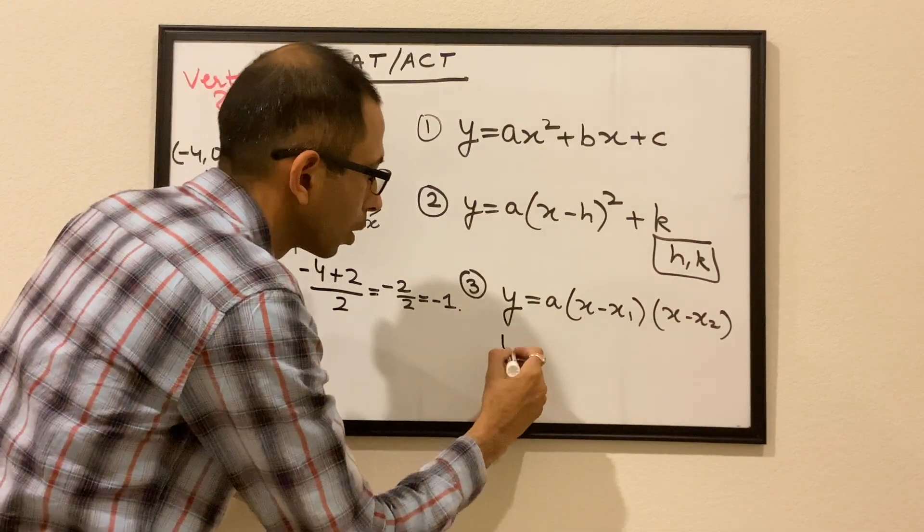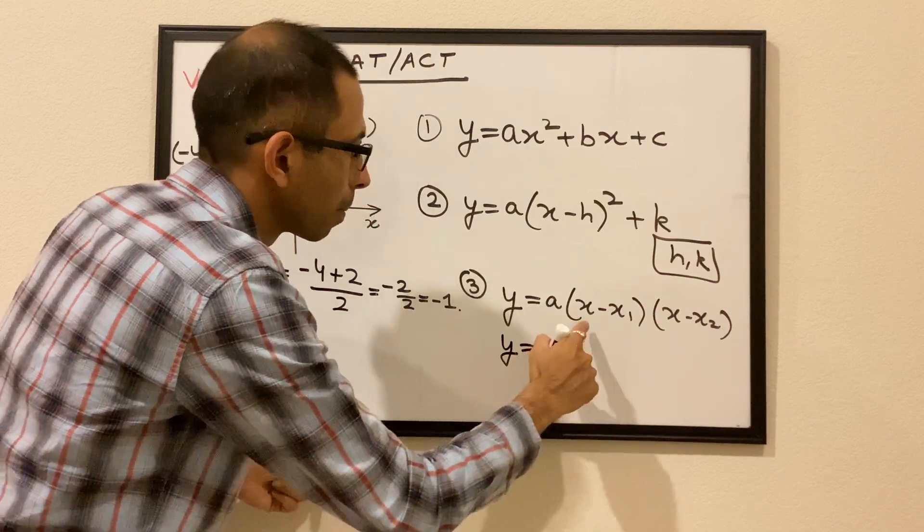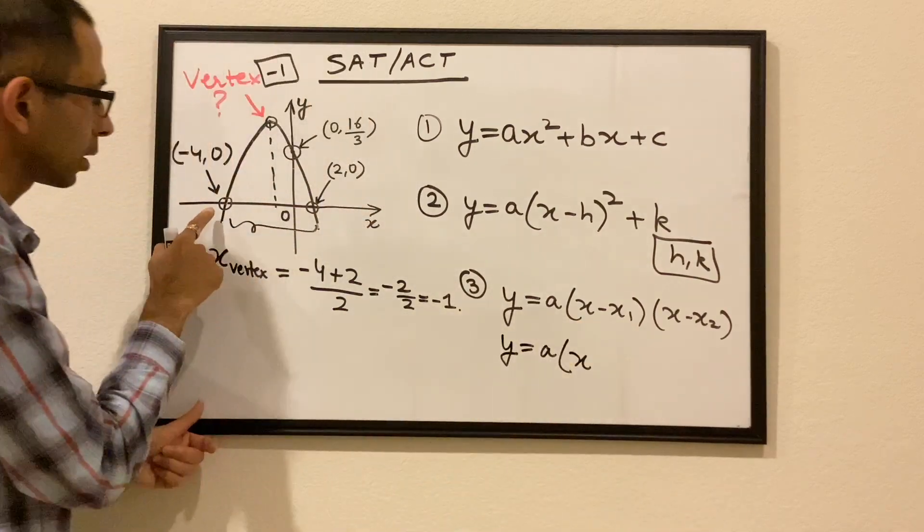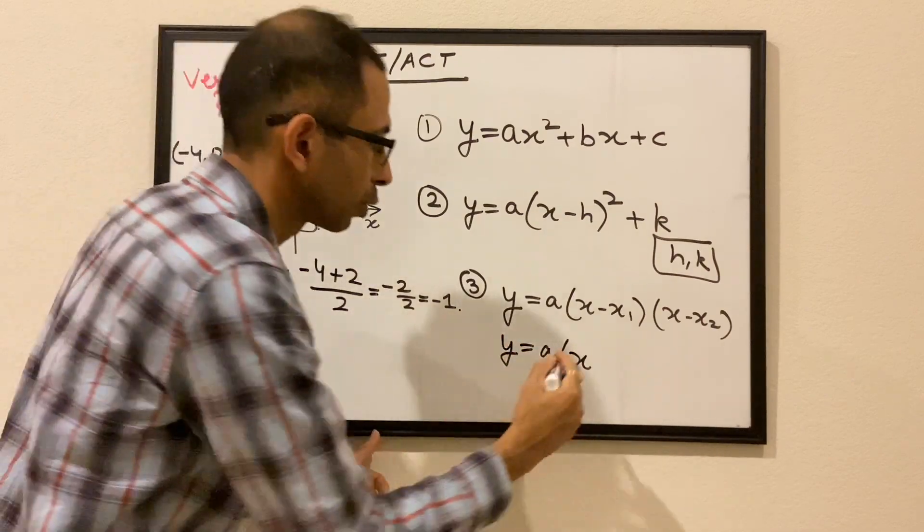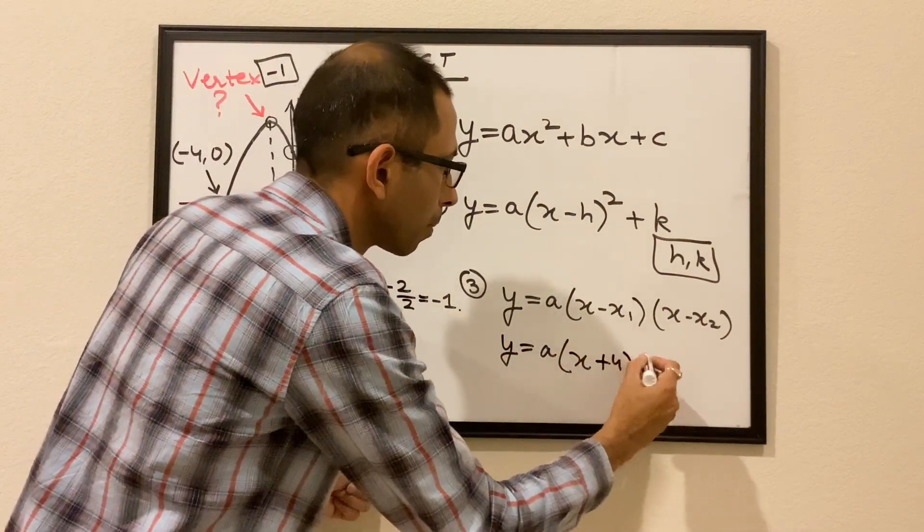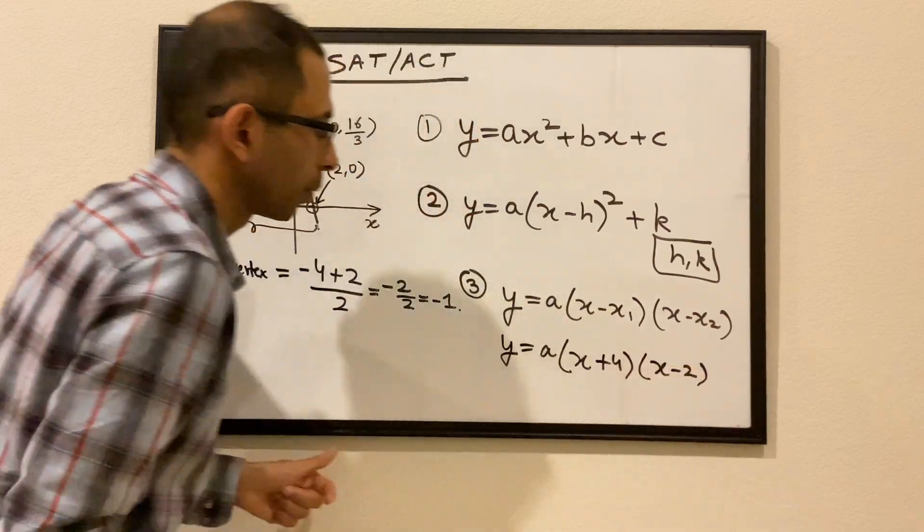So we say y equals a, x, let's say this is the first root x₁, which is -4, so x minus -4 is x plus 4, and then this would be x minus 2.